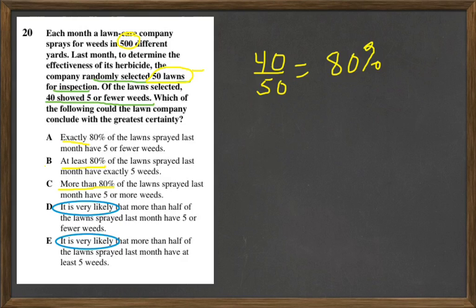...80% showed 5 or fewer weeds. So it's very likely that more than half of the lawns sprayed last month have 5 or fewer weeds. It's very unlikely, as it says in E, that more than half of the lawns sprayed last month have at least 5 weeds.